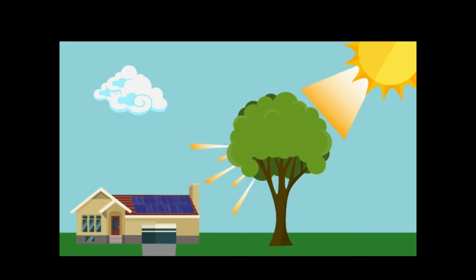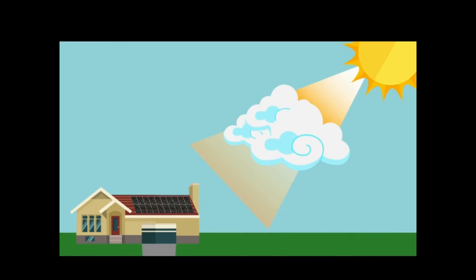Poly panels can gather more scattered rays, such as in shaded conditions, while mono panels gather more energy in low light, such as cloudy conditions.